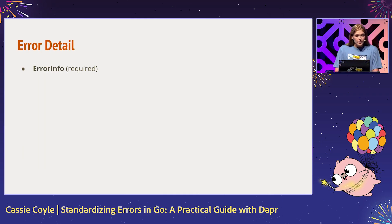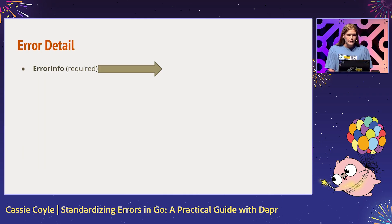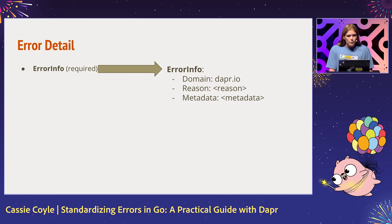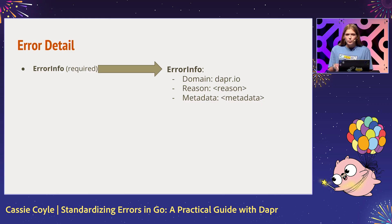Let's take a look at that error info type that we require in Dapr. Each error detail type has its own attributes associated with it. Error info has domain, reason, and metadata. Each error detail should be filled in appropriately based on where it's at in our code base.